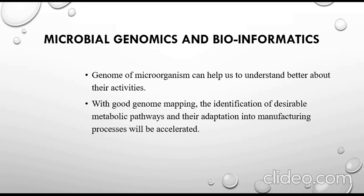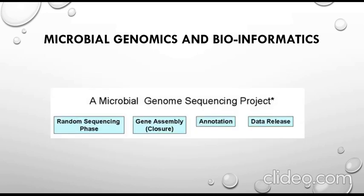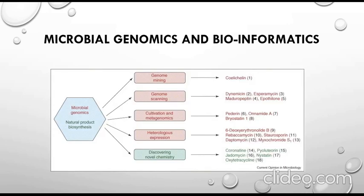So how does microbial genomics actually work? We randomly sequence a particular genome, then assemble the genes, annotate them, and give function to those particular genes. Once we know the gene function, the data is released to the scientific community and scientists work on this data in order to exploit their use. Here we can see the microbial genome and how microbial genomics works.